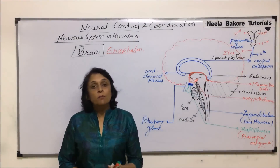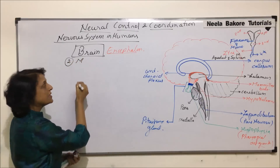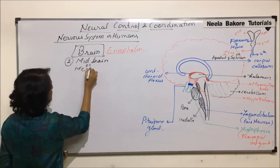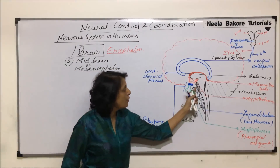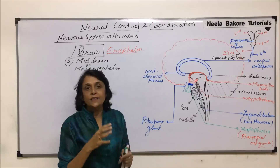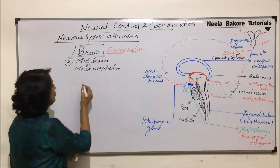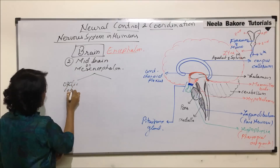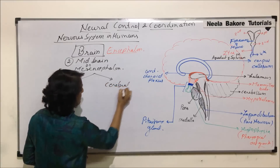We will now talk about the midbrain, that is the second part of the brain, which is also known as mesencephalon. We have already drawn that structure here and it is obvious that it is completely covered by the forebrain. This mesencephalon has two parts: optic lobes and cerebral peduncles.